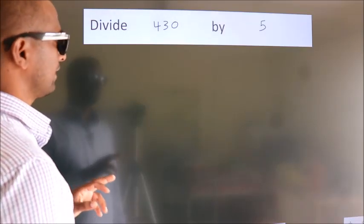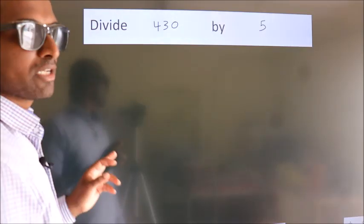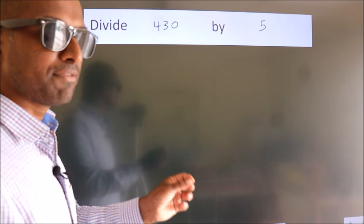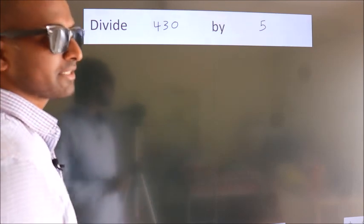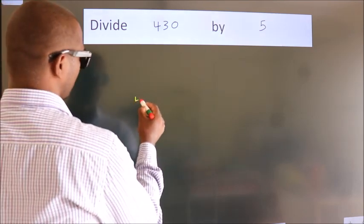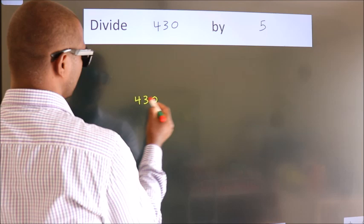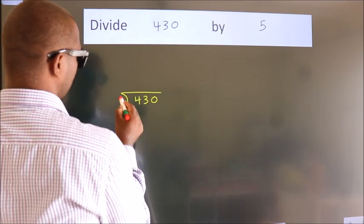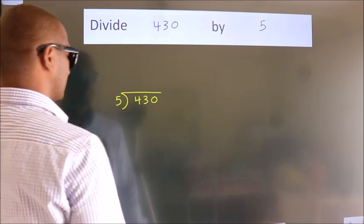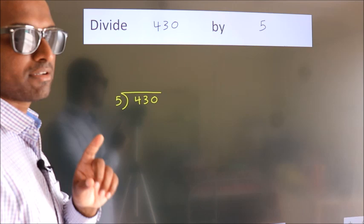Divide 430 by 5. To do this division, we should frame it in this way. 430 here, 5 here. This is your step 1.